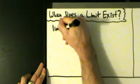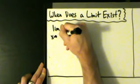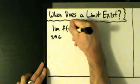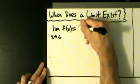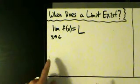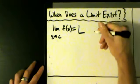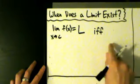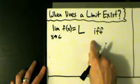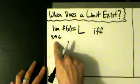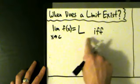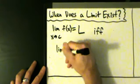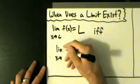So the limit as x approaches some number c of the function f of x equals big L for limit. This is going to be true if and only if both of these one-sided limits exist and equal L.